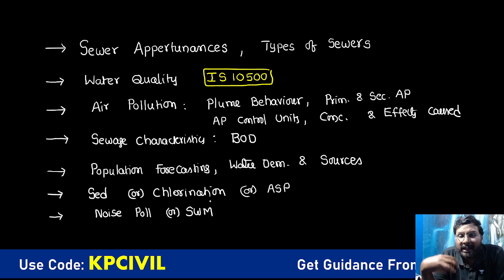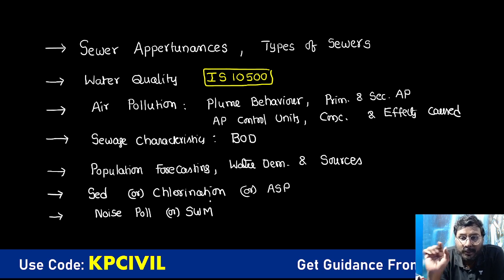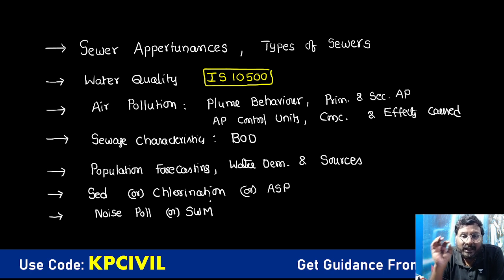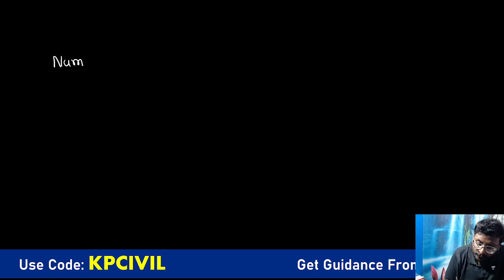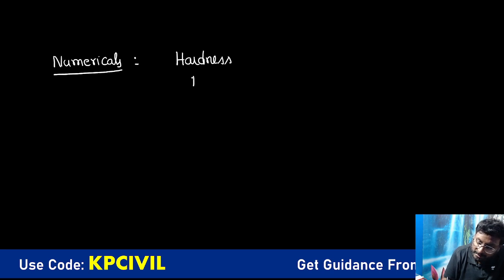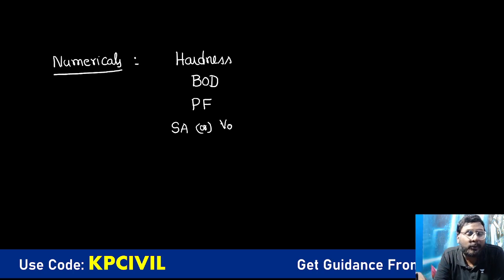When we analyze the previous exam pattern based on the time available for prelims examination — I am talking only about prelims, not mains — the questions are simple, straight-away, direct questions. We may expect one numerical from BOD calculation, or one from hardness, or one from population forecasting. Focus on these four numerical areas: hardness, BOD, arithmetic rate method for population forecasting, and surface area calculation from sedimentation. Not more than that — nothing more is required.